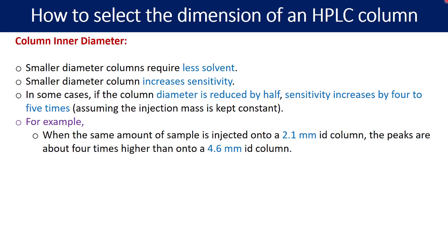For example, when the same amount of sample is injected onto a 2.1 mm ID column, the peaks are about 4 times higher than onto 4.6 mm ID columns. So the response for the peak can get increased by 4 times. It is a great achievement as far as the sensitivity of analytical method is concerned.